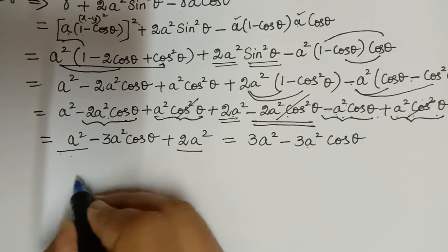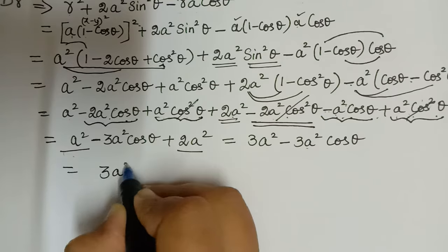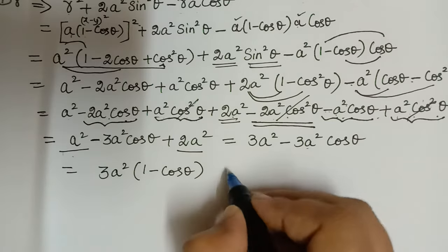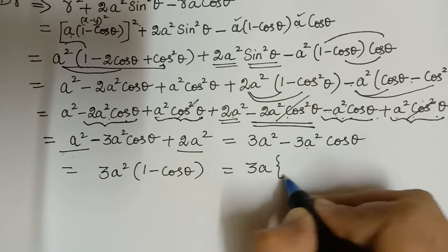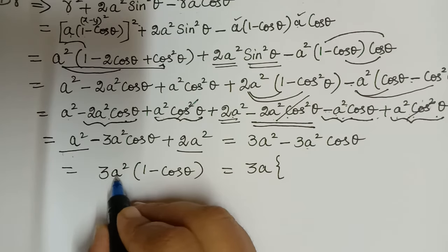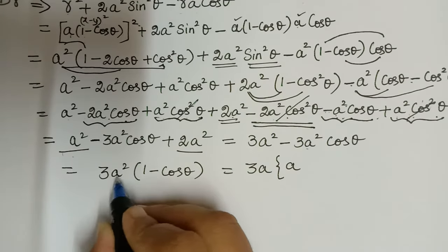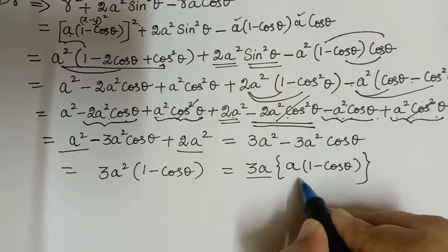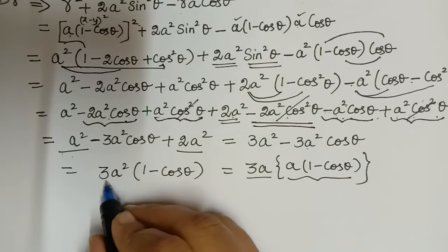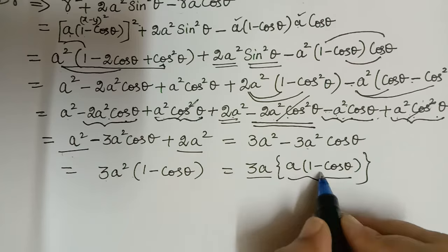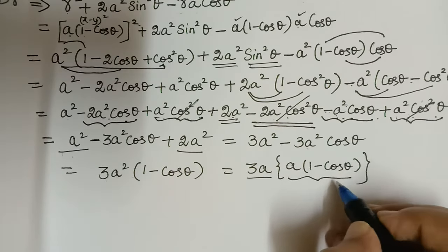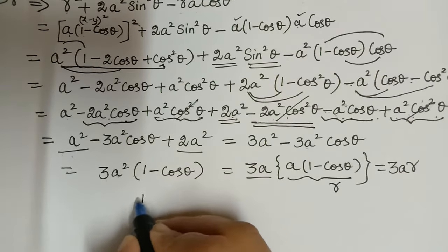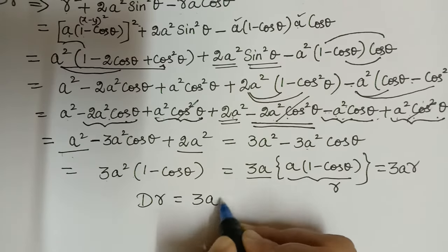So the denominator simplifies to 3a² − 3a² cos θ. Taking 3a² common gives 3a²(1 − cos θ). We can rewrite this as 3a times a(1 − cos θ). Since r = a(1 − cos θ), the denominator equals 3ar.